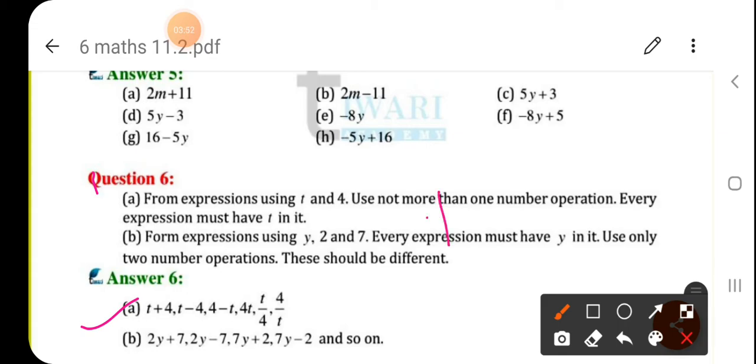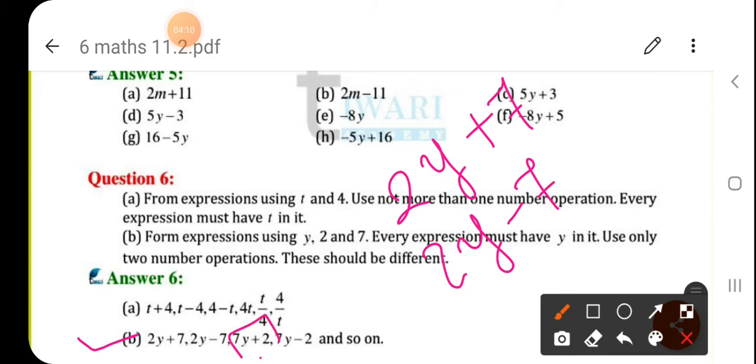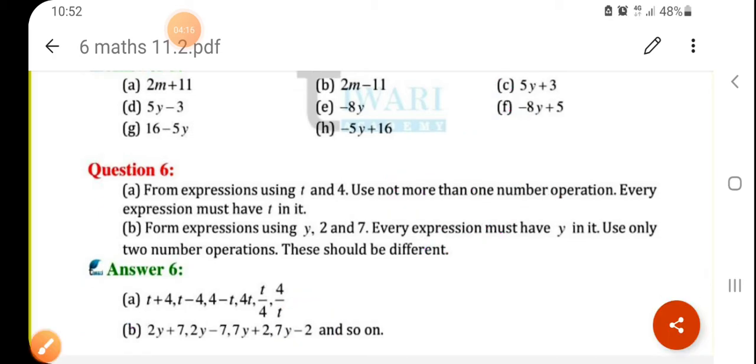For example, multiplication is also there, subtraction is also there. With multiplication, addition is also there. So here is 2Y plus 7. 2 that is multiplied by Y and 7 is added to it. Next, 2Y minus 7. 7 into Y plus 2. 7 into Y minus 2, and so on.